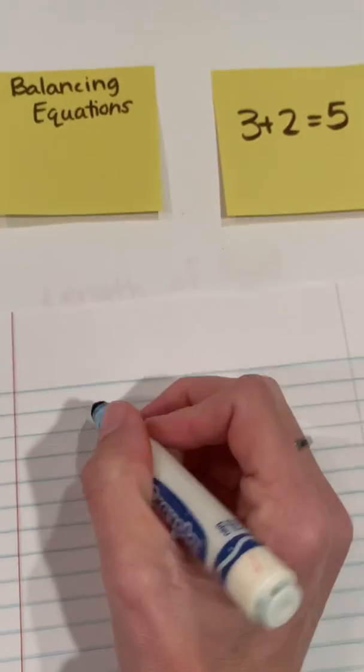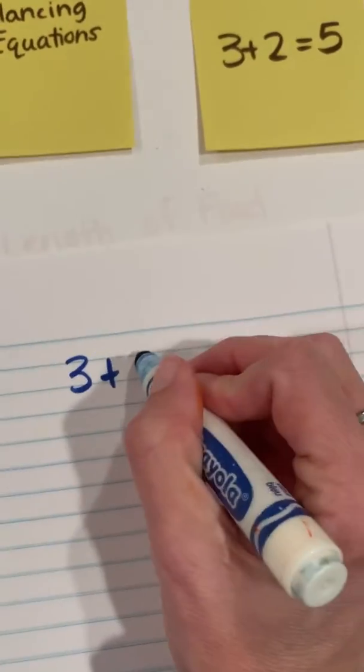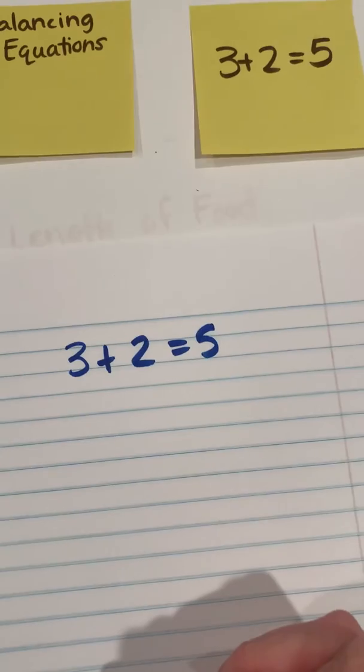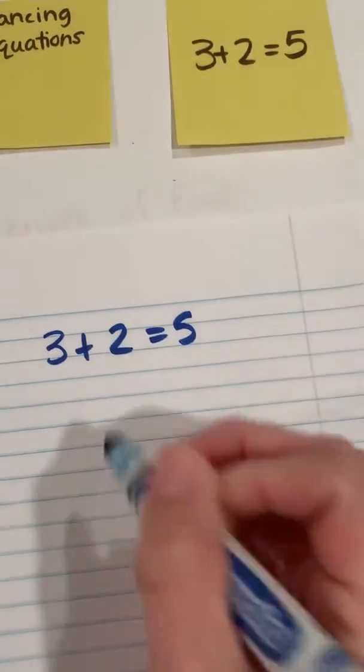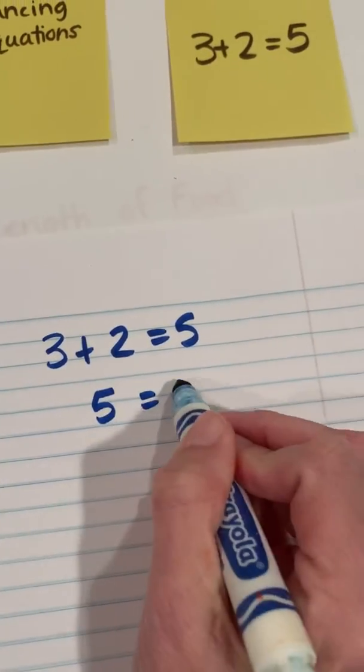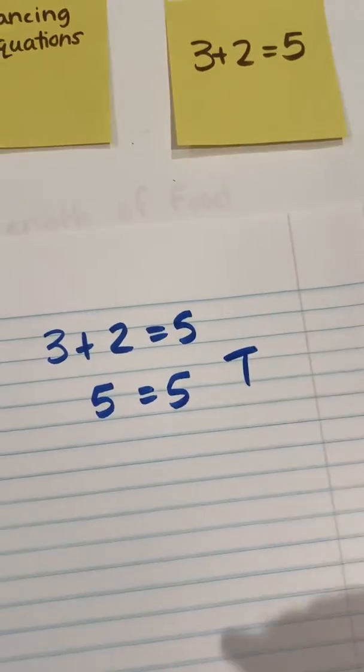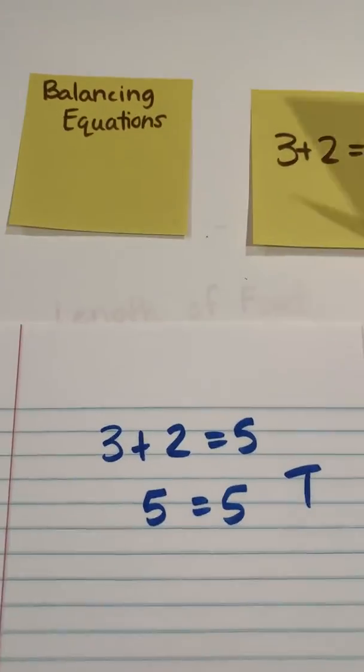Here I have 3 plus 2 equals 5. Well, when I think about it, if I know my facts and I know that 3 plus 2 is 5, then I can look at that and say that's true. 5 is equal to 5. 5 is the same as 5.